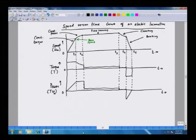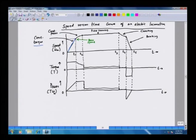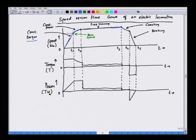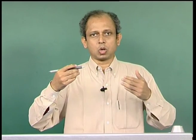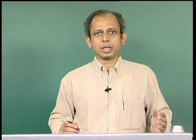We are seeing this diagram from the last lecture once again. We have the constant torque region, from one point to another, which can also be known as constant acceleration, because during the constant torque region the acceleration remains constant. Then we have the constant power region where the power remains constant, and then we have the free running region where the motor speed and the vehicle speed are both constant.